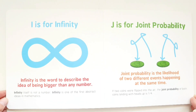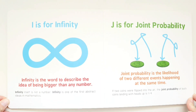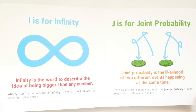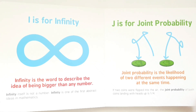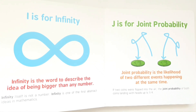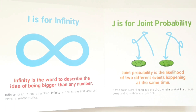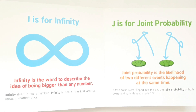I is for infinity. Infinity is the word to describe the idea of being bigger than any number. Infinity itself is not a number. Infinity is one of the first abstract ideas in mathematics.